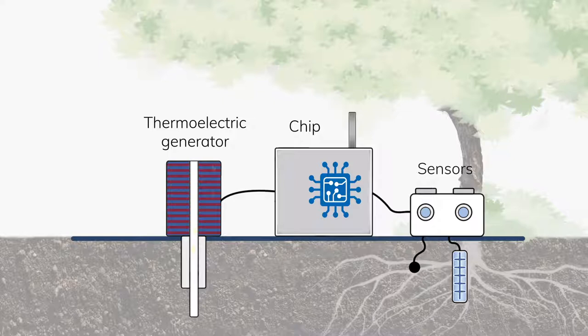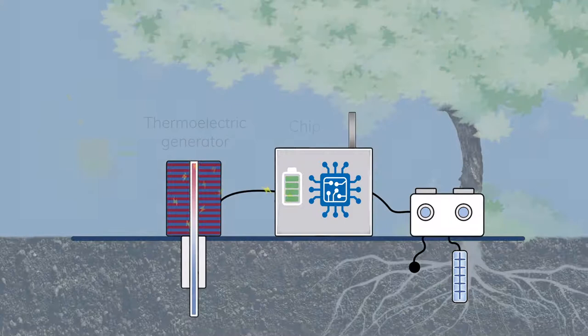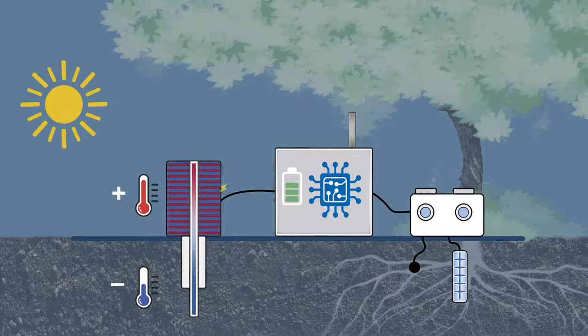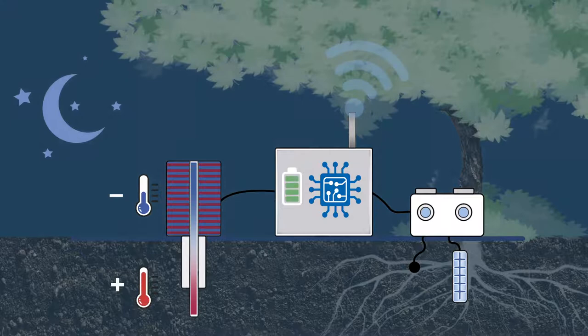The thermoelectric generator uses a patented and non-polluting technology that exploits the difference in temperature between the ground and the air to generate renewable electricity, avoiding the use of batteries. In addition, it works both in the day and at night.